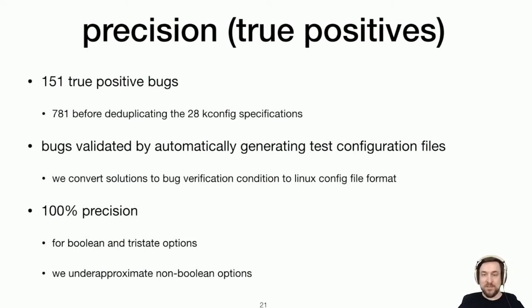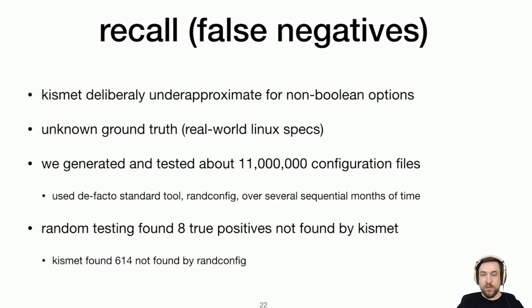But precision doesn't mean, is not the whole story for accuracy. So we modeled Boolean and tri-state options, but we did some tricks to make non-Boolean stuff faster. We didn't model it completely or soundly. And so that meant we were open to false negatives. And so we also evaluated that by seeing if we could find any negatives that kismet missed. One hard part about this is we don't really know the ground truth. We were dealing with, you know, 150,000 lines of kconfig. We don't really know how many unmet dependencies were there. So we generated and tested around 11 million random configuration files using the randconfig tool and actually found that there were eight positives from that process not found by kismet. And, you know, we don't know what the ground truth is, but we were heartened to see that kismet found many, many more than this random process and missed eight compared to the random approach.